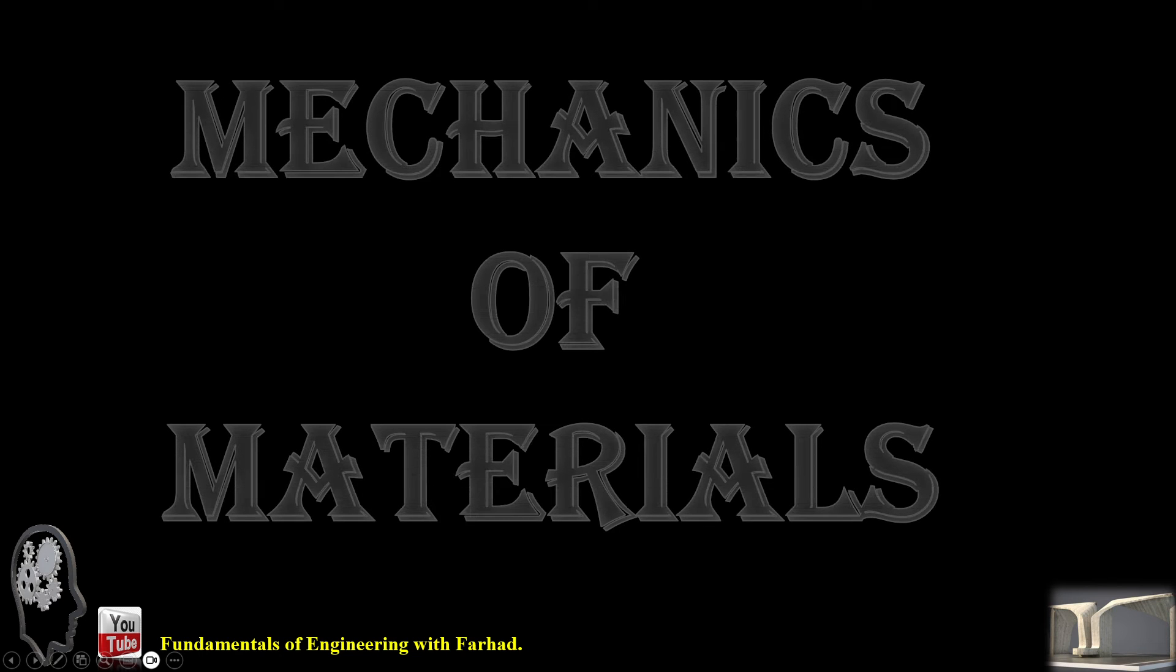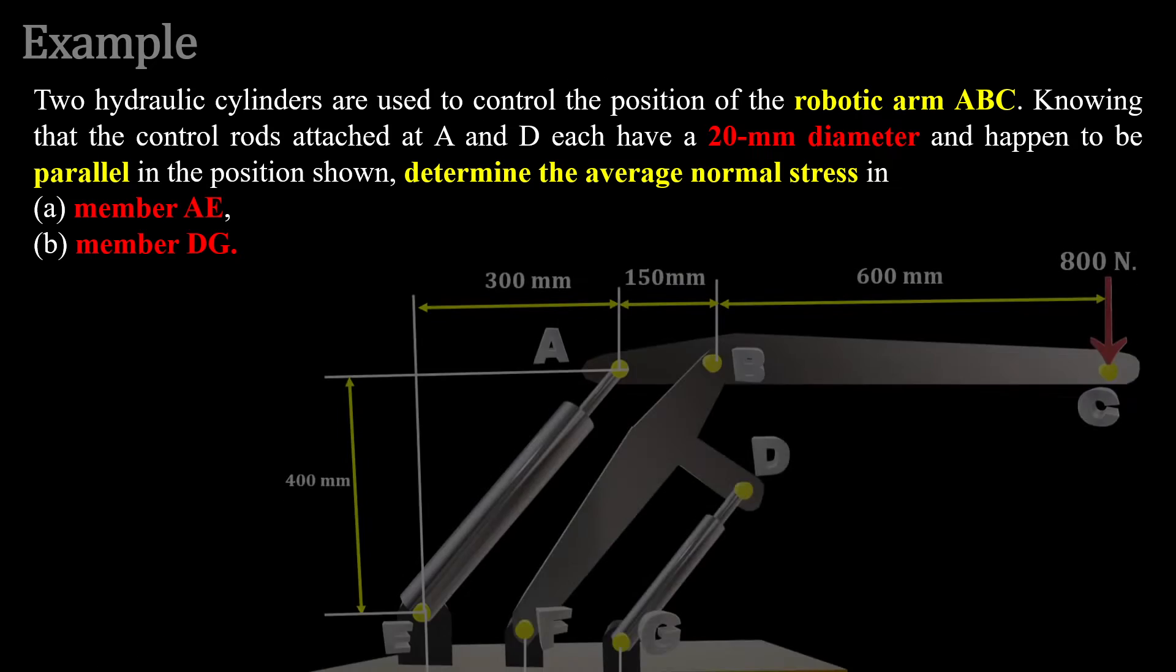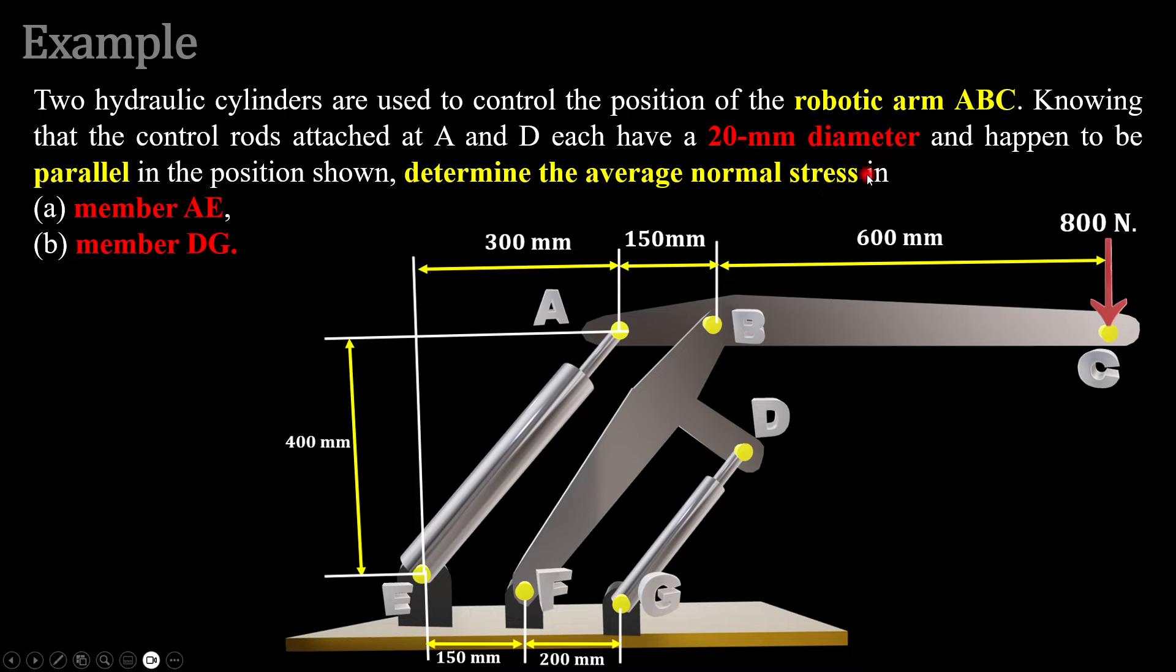Good evening everyone and welcome back to Fundamentals of Engineering with Farhad, Mechanics of Materials. In this example we have a robotic arm ABC which is controlled by two cylindrical pistons, AE and DG.